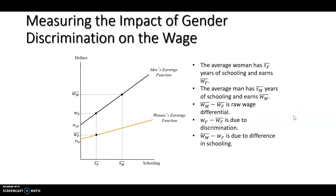This graph describes the decomposition. You can see that women's earnings function is different from the men's earnings function. If we look at the relationship between wage on the vertical axis and schooling on the horizontal axis, we're going to assume that schooling is the only thing that affects someone's wage. We know that's not true in the real world, but this is just to keep the example simple. We'll say that the only thing that determines your productivity is how much school you have.